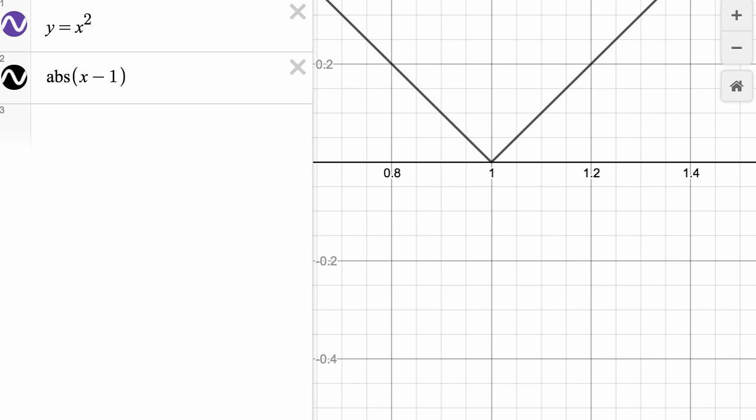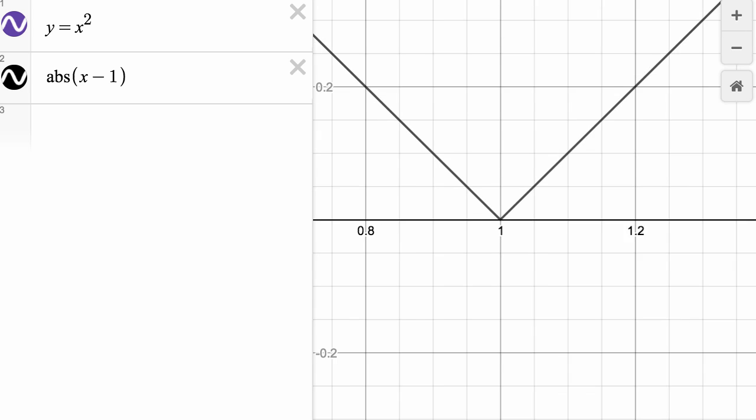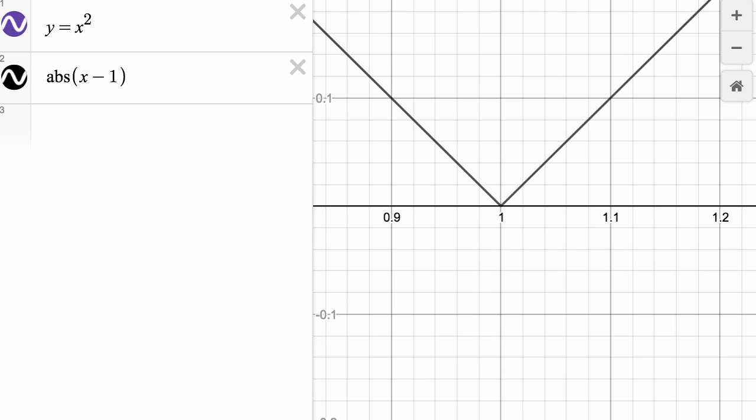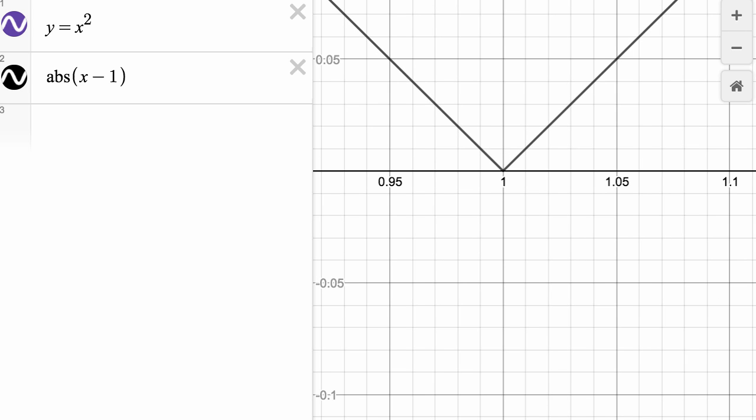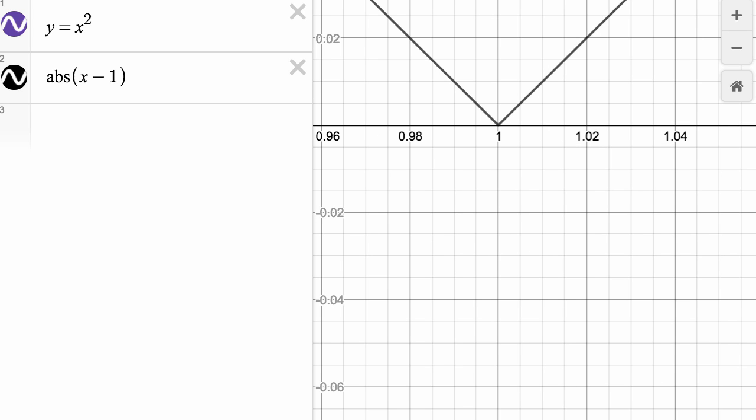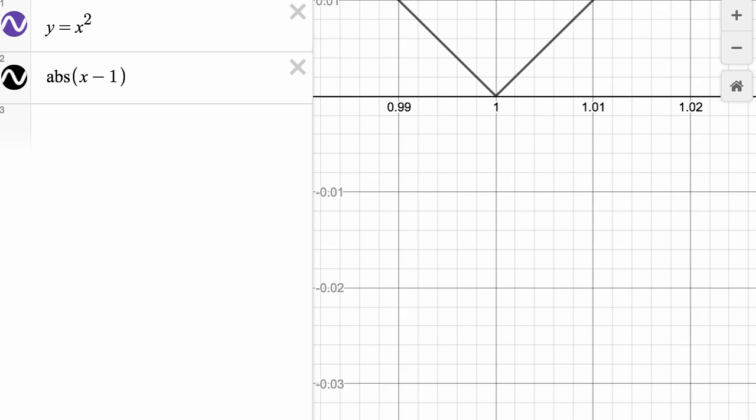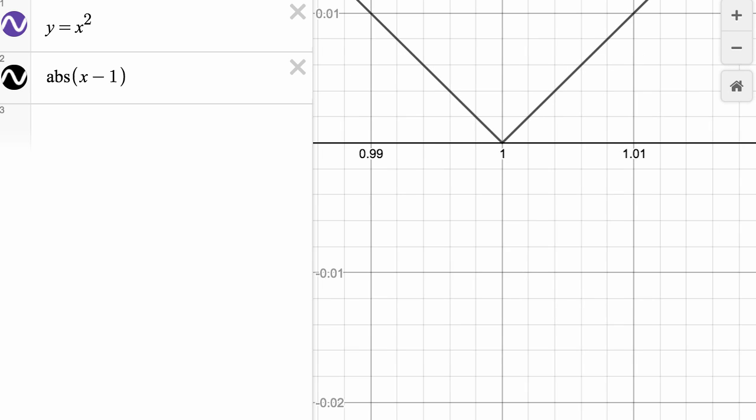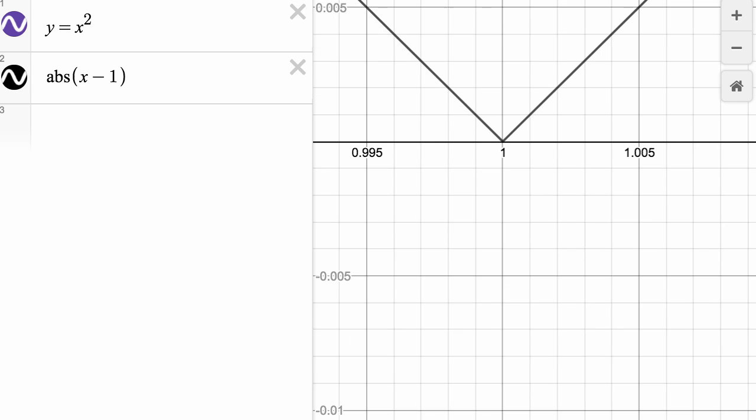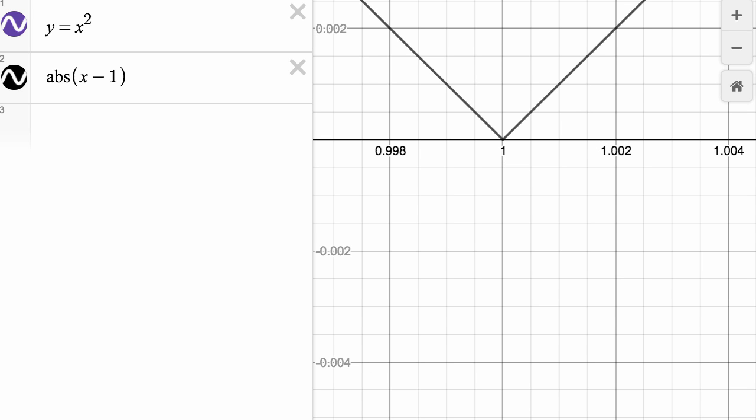And once again, this is not rigorous mathematics, but it is to give you an intuition. No matter how far we zoom in, we still see this sharp corner. It would be hard to construct the only tangent line, a unique line that goes through this point one comma zero. I can construct an actual infinite number of lines that go through one comma zero, but that do not go through the rest of the curve. And so notice, wherever you see a hard corner, like we're seeing at one comma zero in this absolute value function, that's a pretty good indication that we are not going to be differentiable at that point.